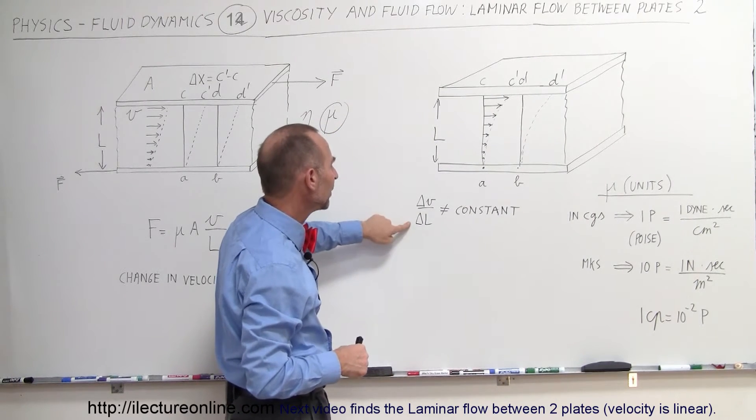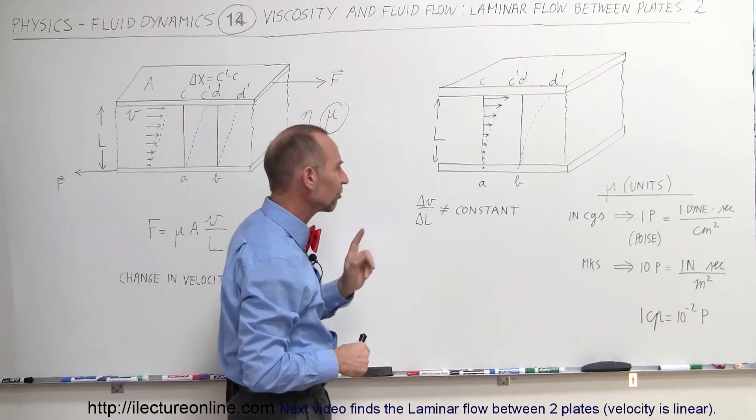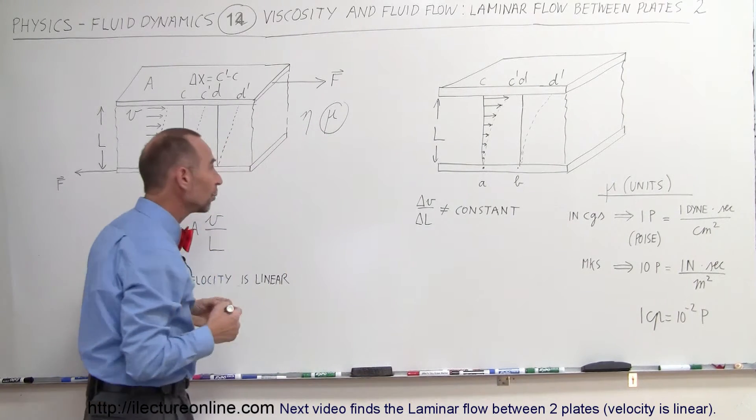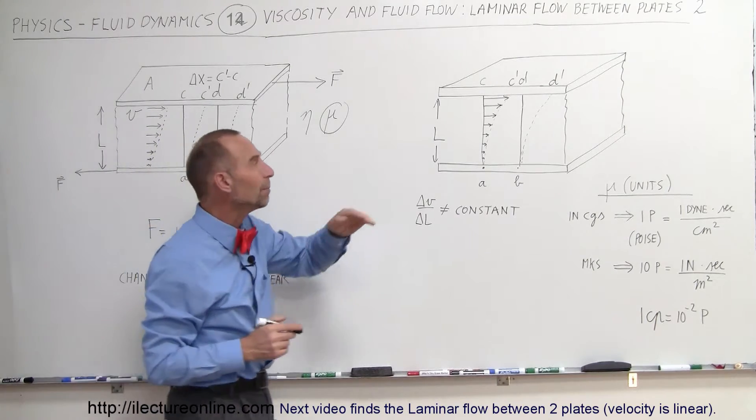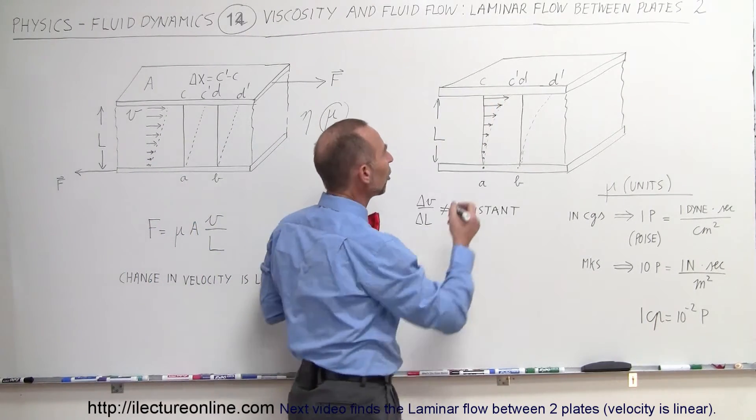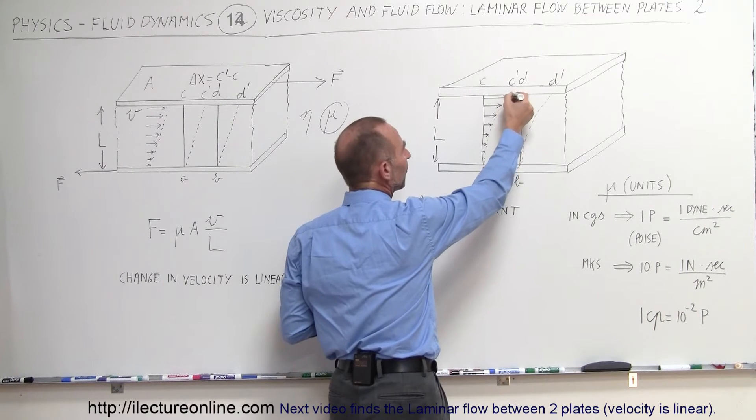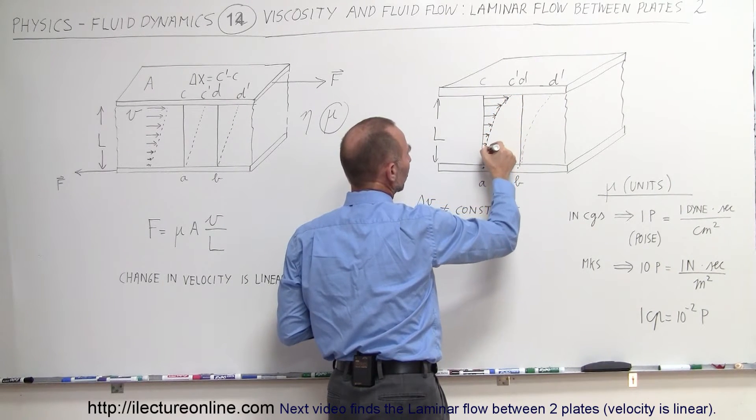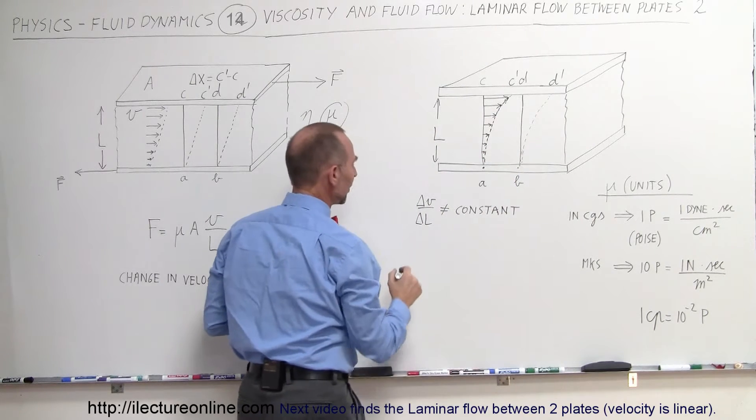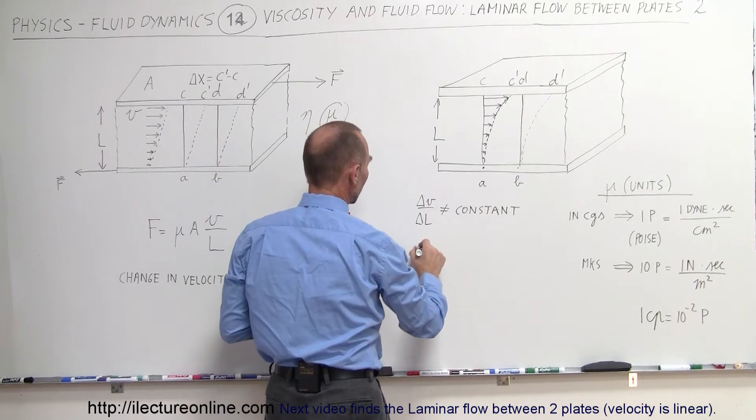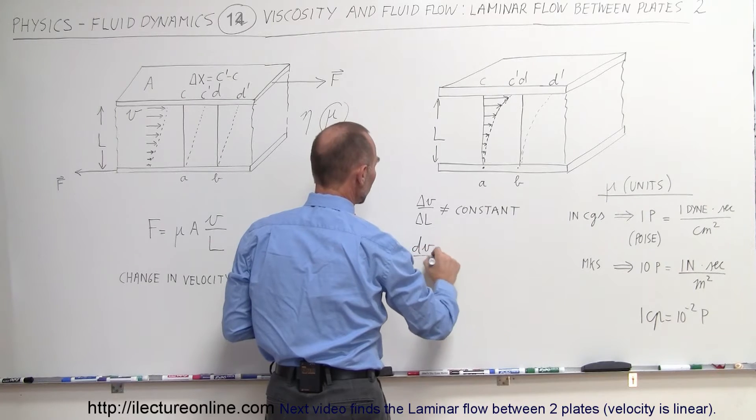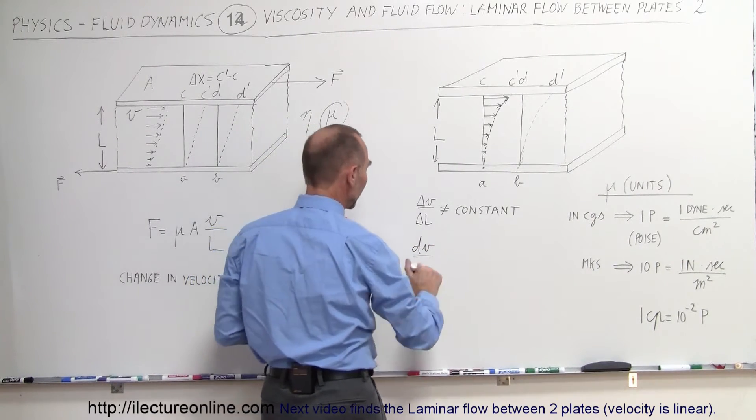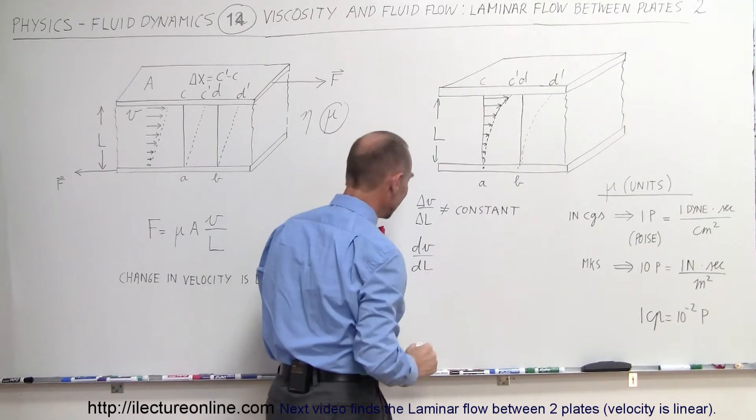We know that delta v divided by delta l is not a constant. So the way we deal with it is we can make it instantaneous, we can pick any particular point and then the slope at that point will be the slope of a function. This line will basically be some sort of function that can be defined and therefore we can say that we have a change in velocity with respect to position in l.